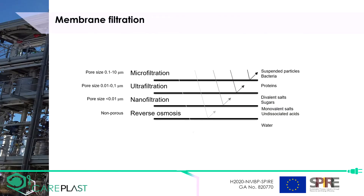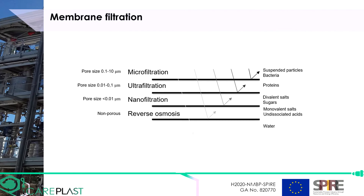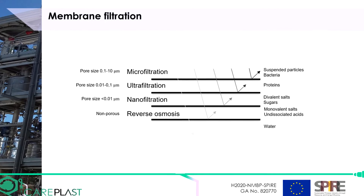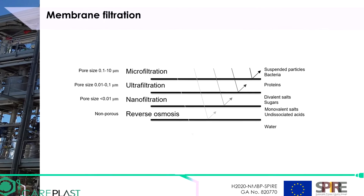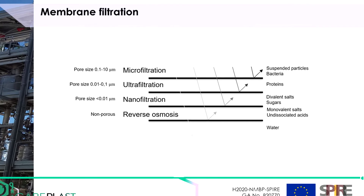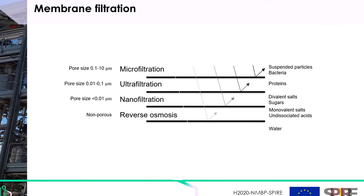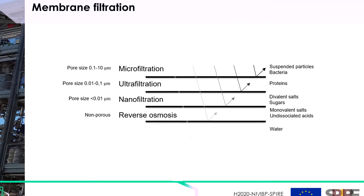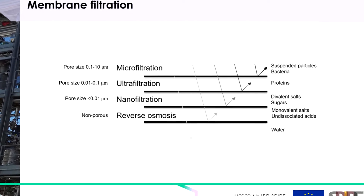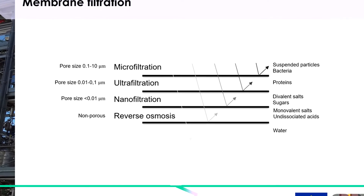Membranes can be used to separate solutes from solvent by using a membrane that has suitable characteristics for retaining these solutes. There are four main types of pressure-driven membrane filtration: microfiltration, ultrafiltration, nanofiltration, and reverse osmosis, in order of decreasing pore size.